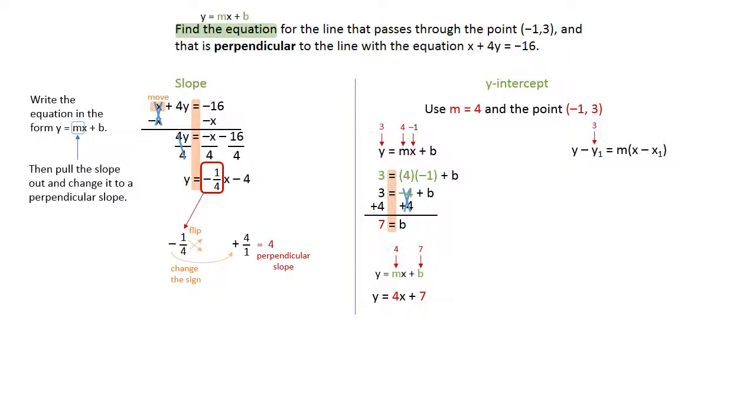This is how you would use this formula. You will plug in 3 for the y1, 4 for the m, and negative 1 for the x1. You will have to change the sign inside the parentheses first, so y minus 3 equals 4 times x plus 1. That's the first thing. Then distribute the 4: y minus 3 equals 4x plus 4, and then add the 3.